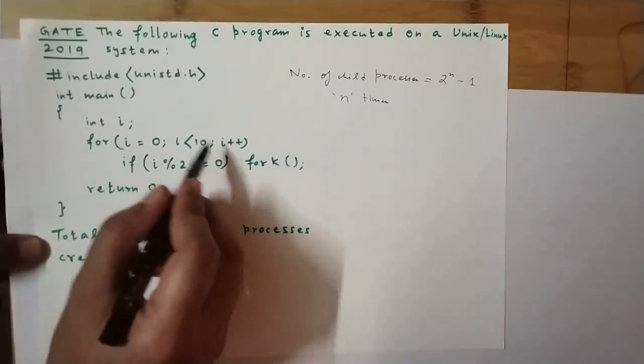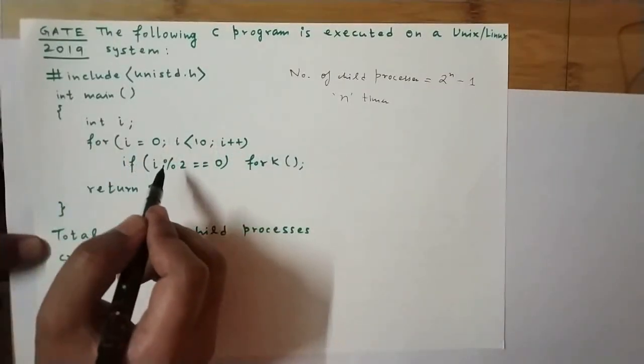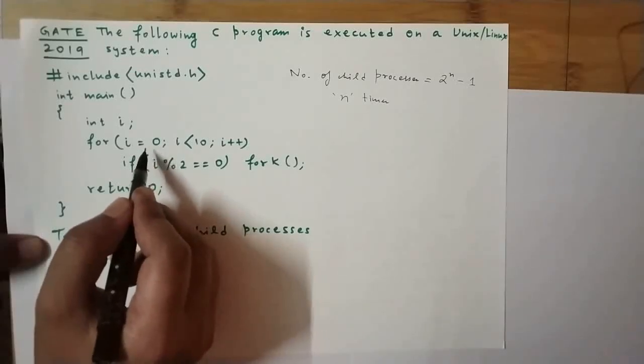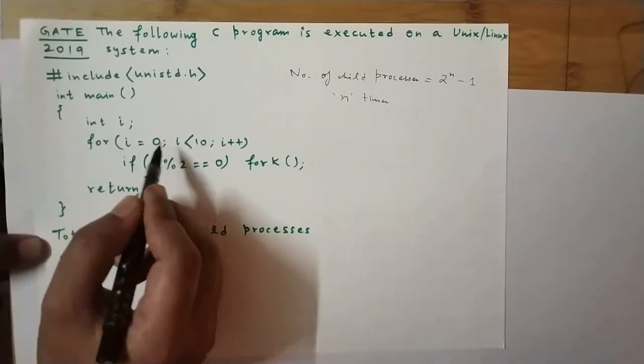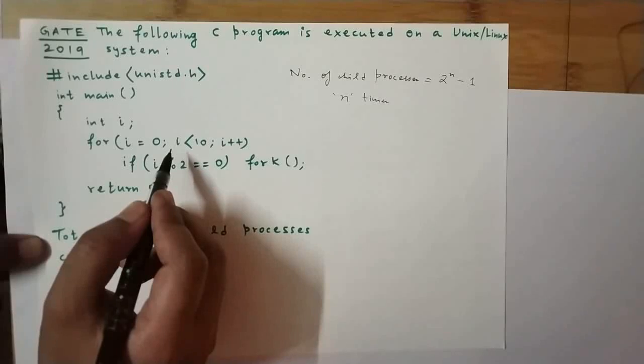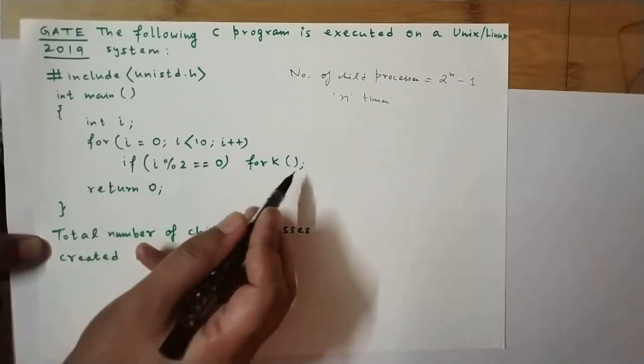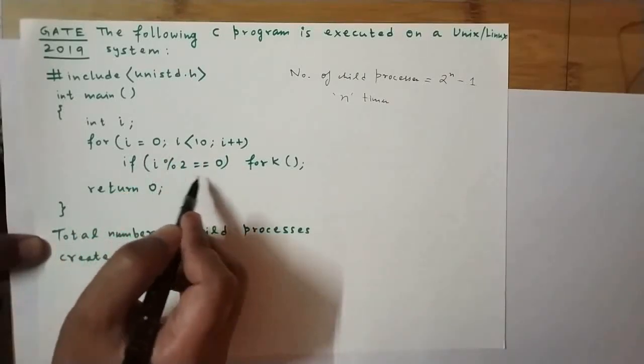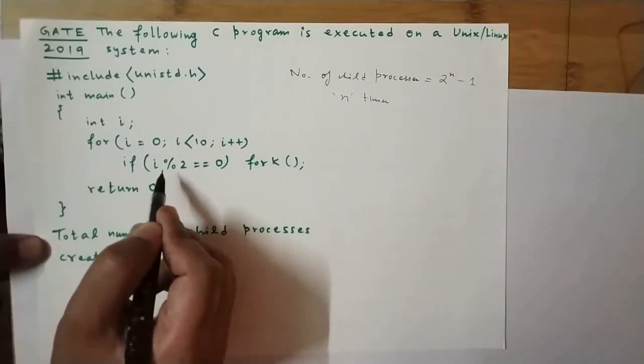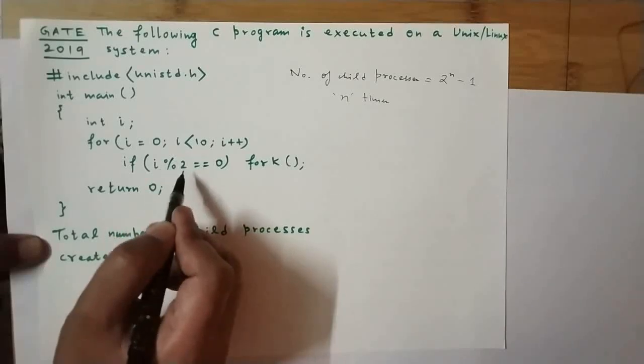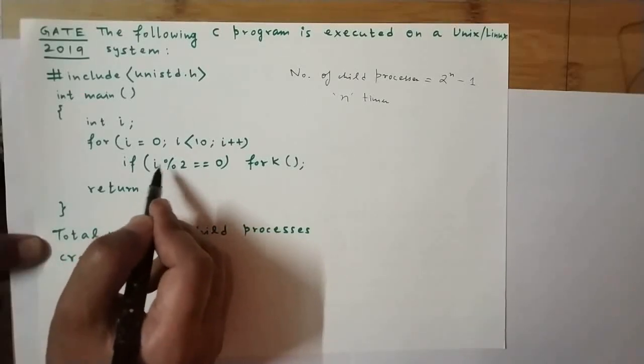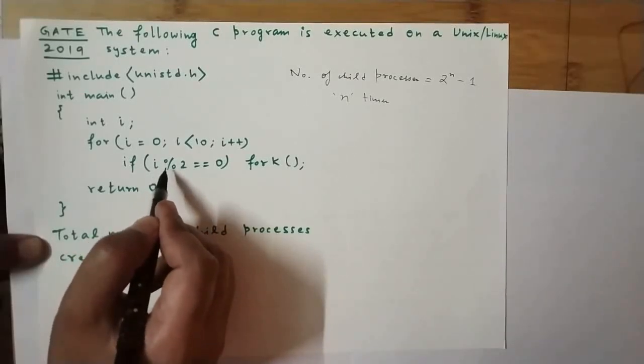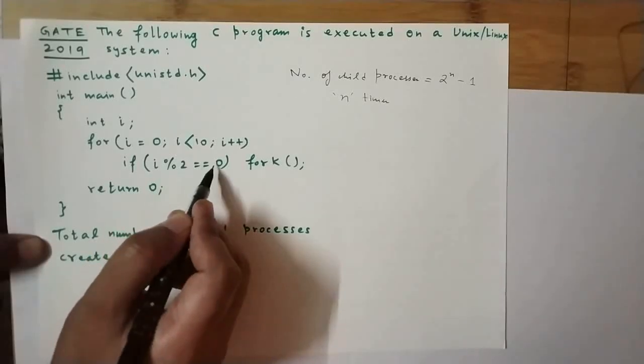In this for loop, as you can see, this will execute 10 times from 0 to 9. The fork system call is executed for even values of i. As you can see, this condition i mod 2 equal to 0 is a condition for even numbers. So whenever i takes on an even value, only then on dividing it by 2 we get a remainder of 0.